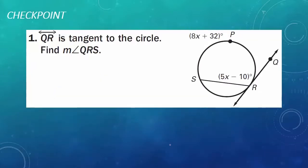Checkpoint problem number one is yours. Line QR is tangent to the circle. Find the measure of angle QRS.